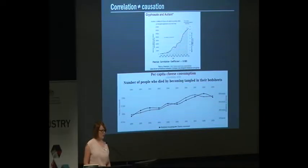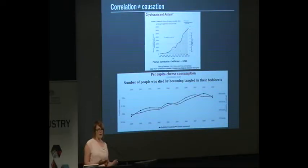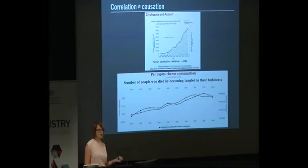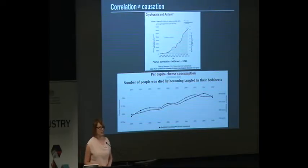This has also led to a lot of 'glyphosate causes everything' sorts of things. The graph I've got here hasn't actually come from a scientific study. It came from someone who took a graph of the use of glyphosate and a graph of the incidence of autism and superimposed one on top of the other and said, 'well, here we have a correlation.' But if you go to the Spurious Correlations website, you can find that most things will correlate with something. For example, the number of people who die from becoming tangled in their bedsheets correlates quite nicely with cheese consumption. Correlation doesn't necessarily equal causation.